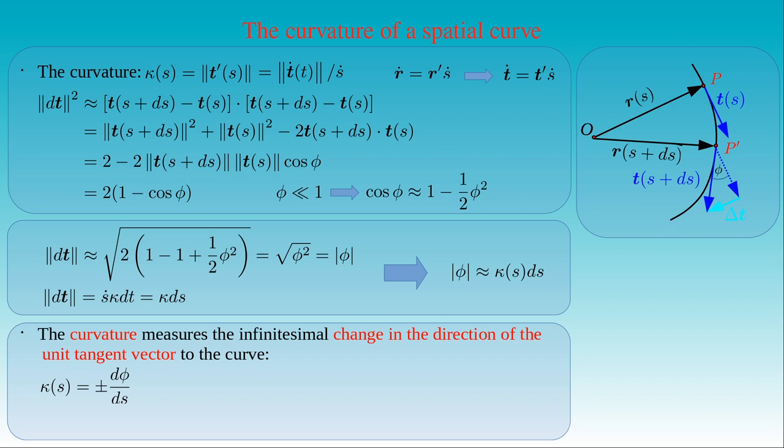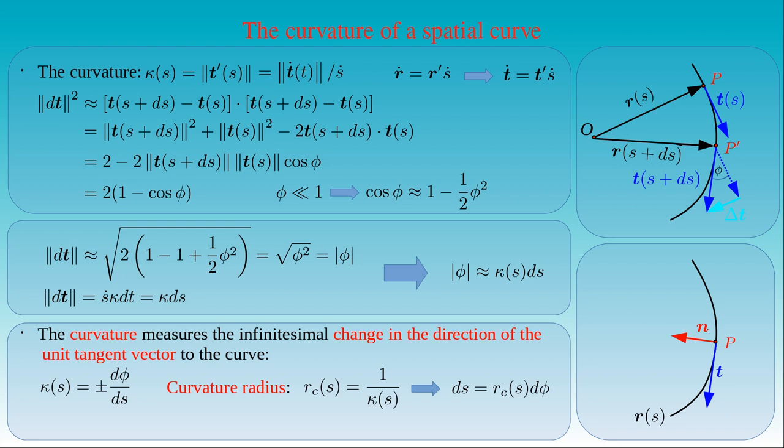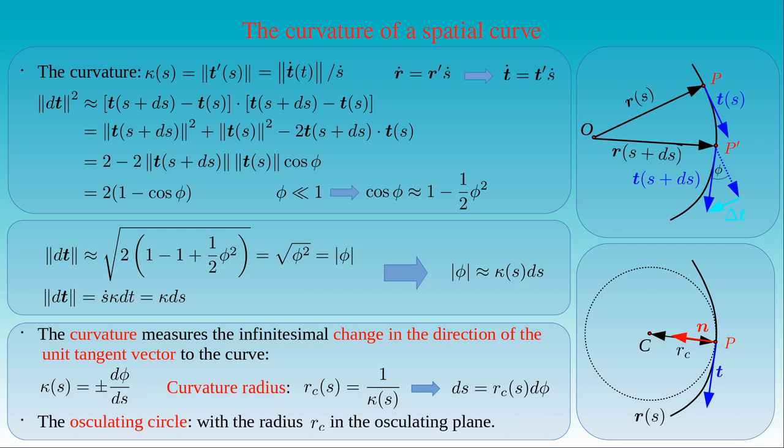Here we define the curvature radius R_C as the inverse of the curvature kappa. Then an infinitesimal change in the arc length s along the curve at a point P equals the curvature radius times the infinitesimal change in the direction of the unit tangent vector. If we take the point P on the curve r(s) with its tangent T and normal N, we can draw the osculating circle with curvature radius R_C, centered in the direction of N, lying in the osculating plane spanned by T and N. The smaller R_C is at P, the greater the curvature kappa. If the curve is a straight line, the radius becomes infinite at each point and the curvature is zero. This is the geometric interpretation of kappa.